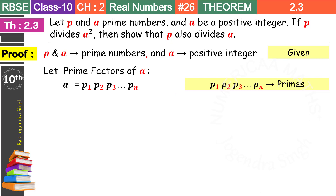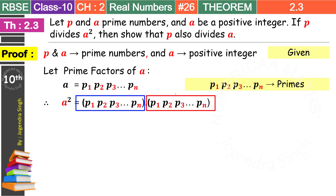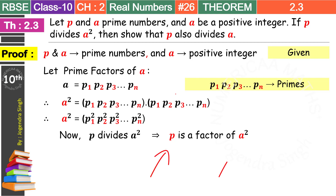Now we have the factors of A. We need A square because we know P divides A square. A square means A multiplied two times. A is p1·p2·p3...pn, so A square means p1 appears two times, p2 two times, p3 two times, and pn two times. Writing these combined: A square is equal to p1 square into p2 square into p3 square till pn square.